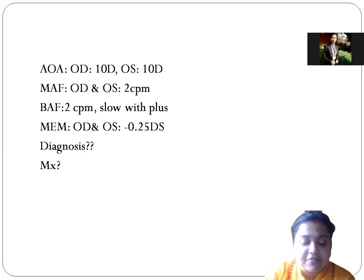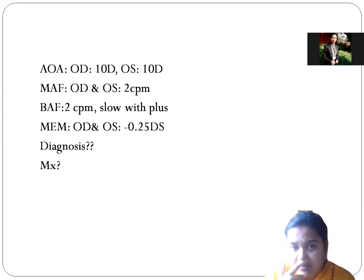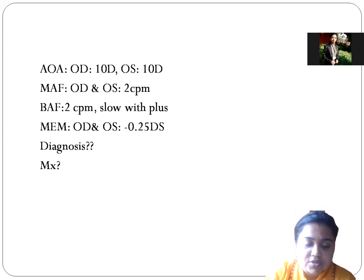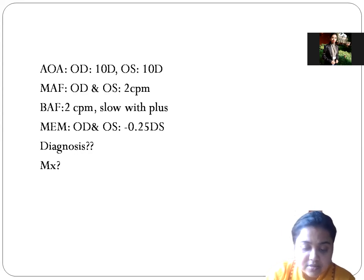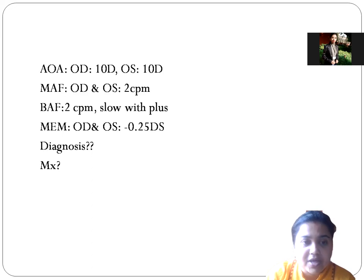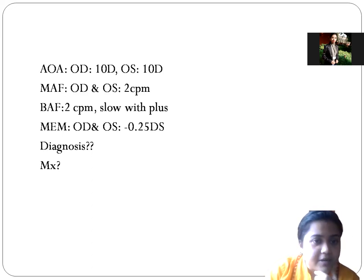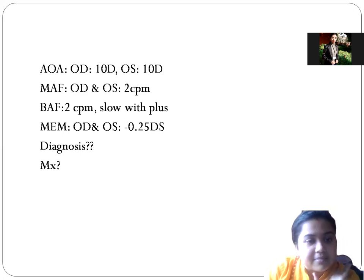What should be the normative amplitude of accommodation for a 22-year-old person? Using the formula: 18.5 minus 0.3 times age — 0.3 times 22 is 6.6. So 18.5 minus 6.6 equals 11.9 diopters. The expected accommodation for this patient is 11.9 diopters, but he is showing only 10 diopters.